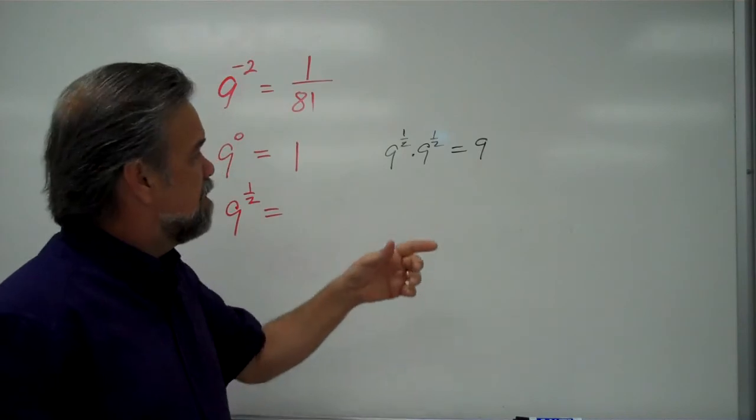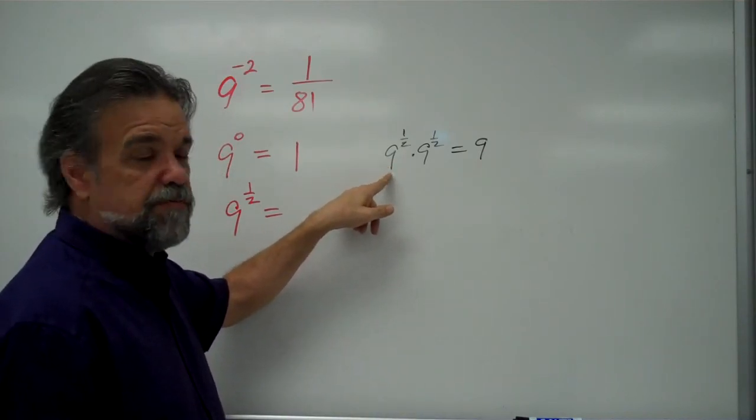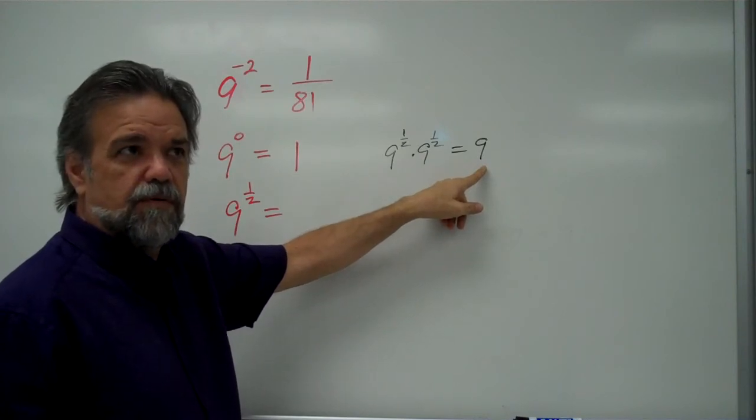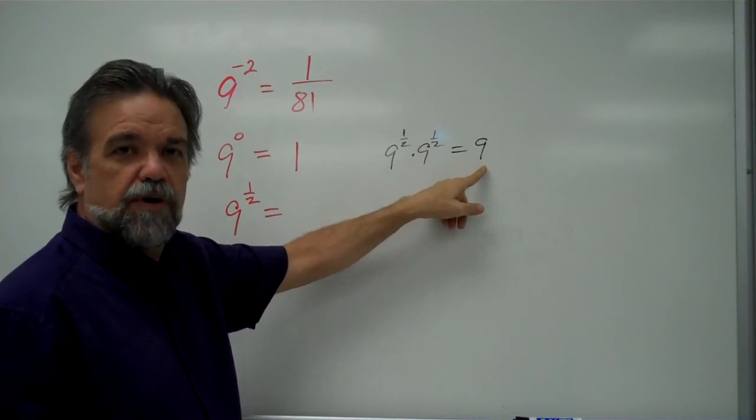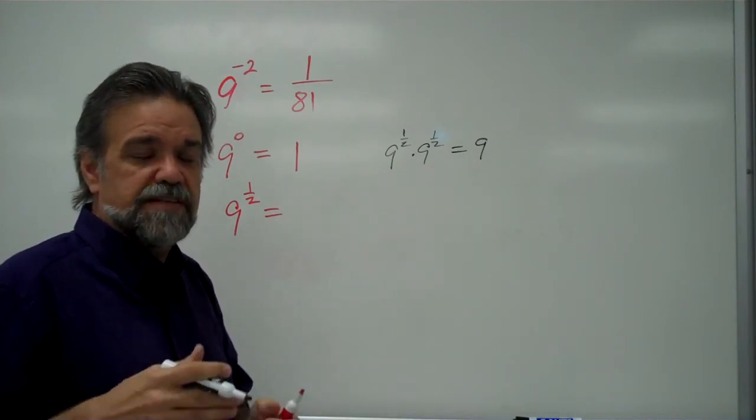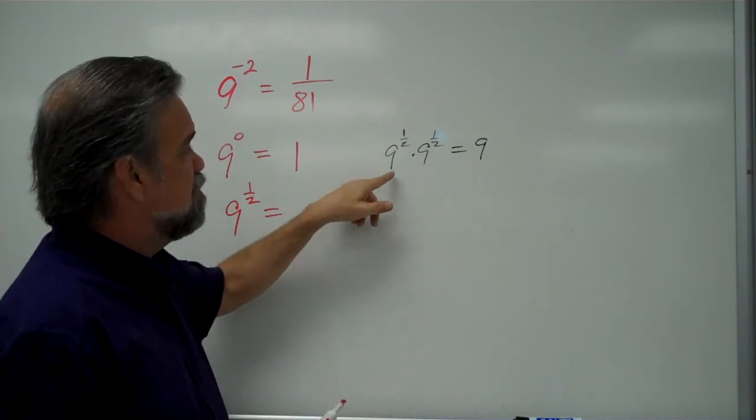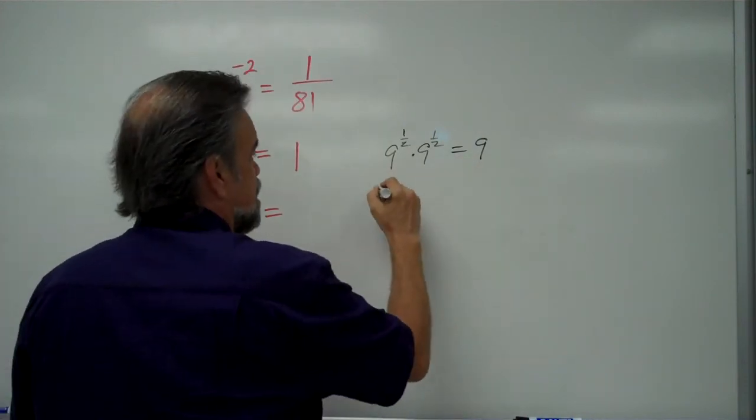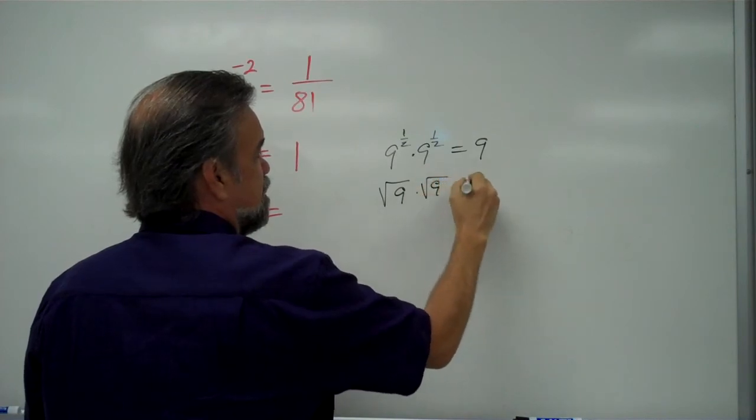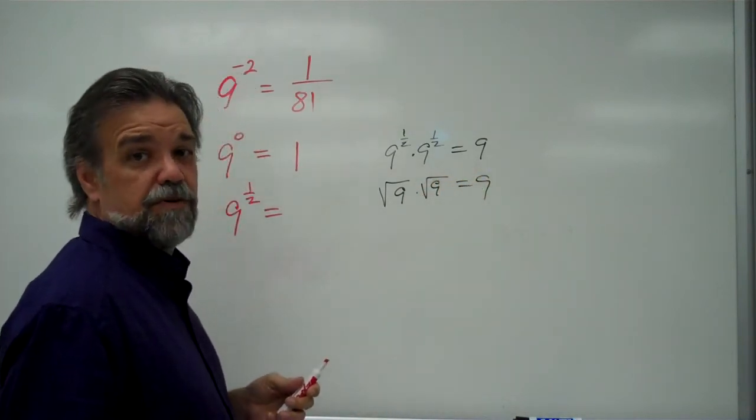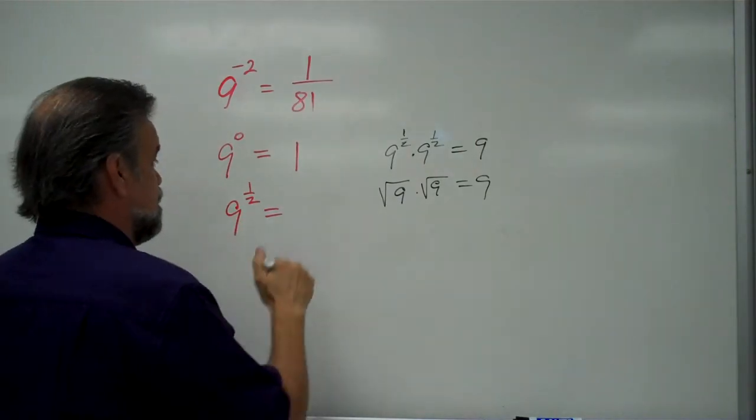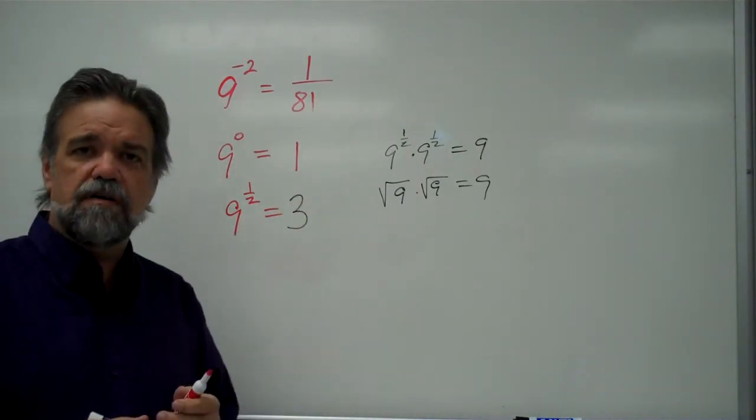Well, what does that mean? It means that this number, 9 to the 1 half power, times itself equals 9. Well, that's just a square root. The square root of a number, that's how you define it. It's the number when you multiply it by itself, you get 9. So that means the same thing as saying square root of 9 times the square root of 9 equals 9. We all know what that is. Square root of 9 is 3. So what does that mean? It means 9 to the 1 half power is 3.